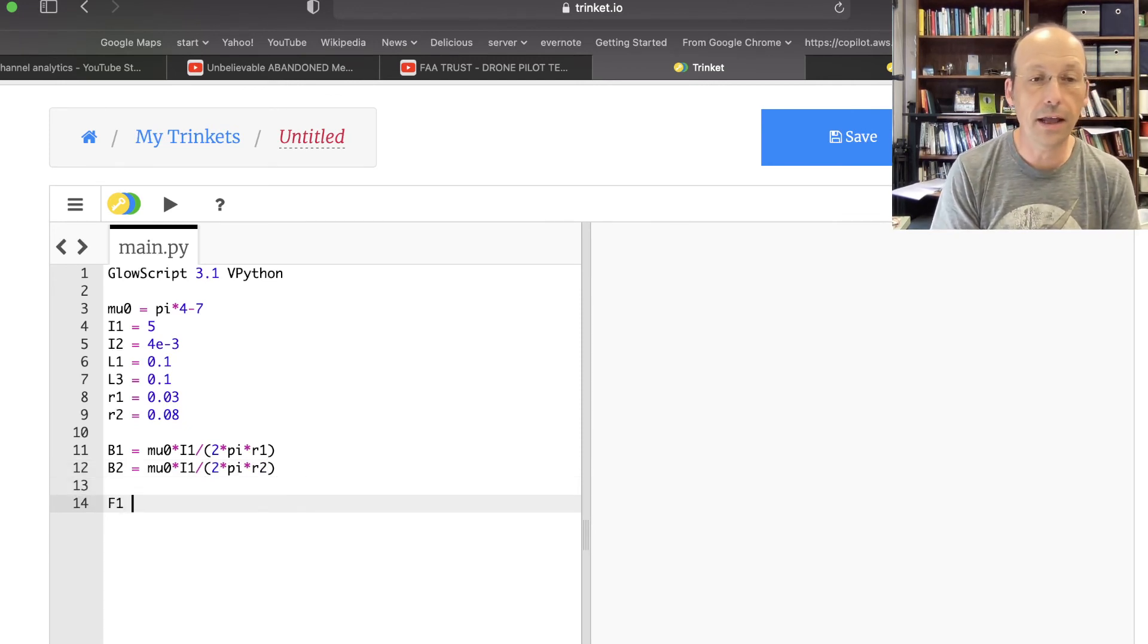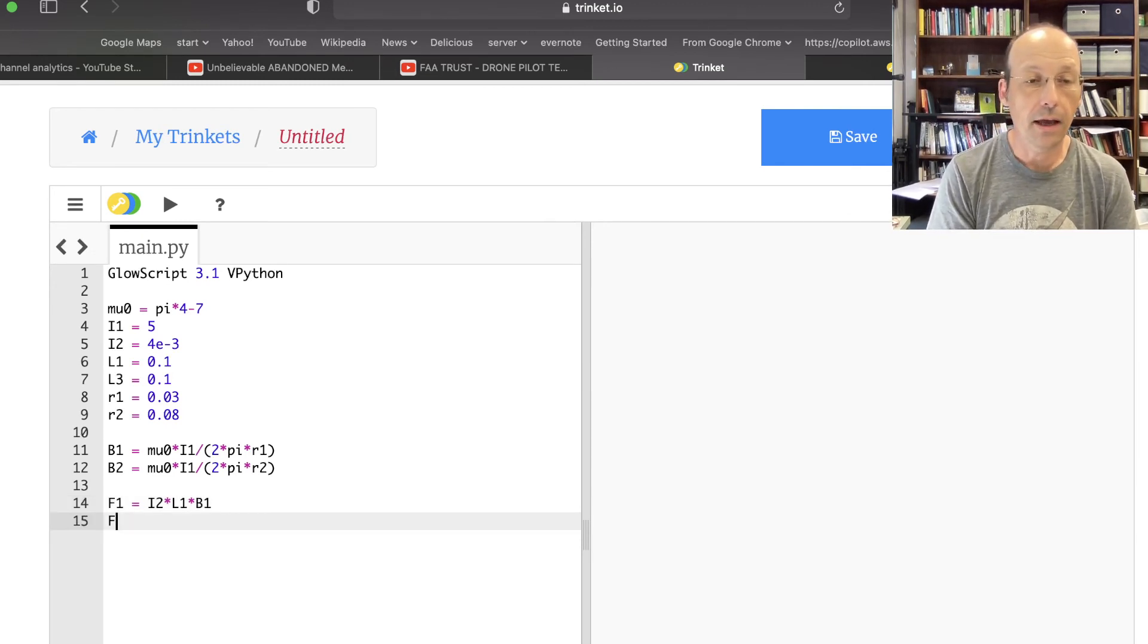Now I can get F1 equals I2 times L1 times B1. F2 equals negative I2 times L3. That's actually F3. F2 is cancelled. I2 is the current in that whole loop. They all have the same times B2, which I should have called B3. So now F net equals F1 plus F3.